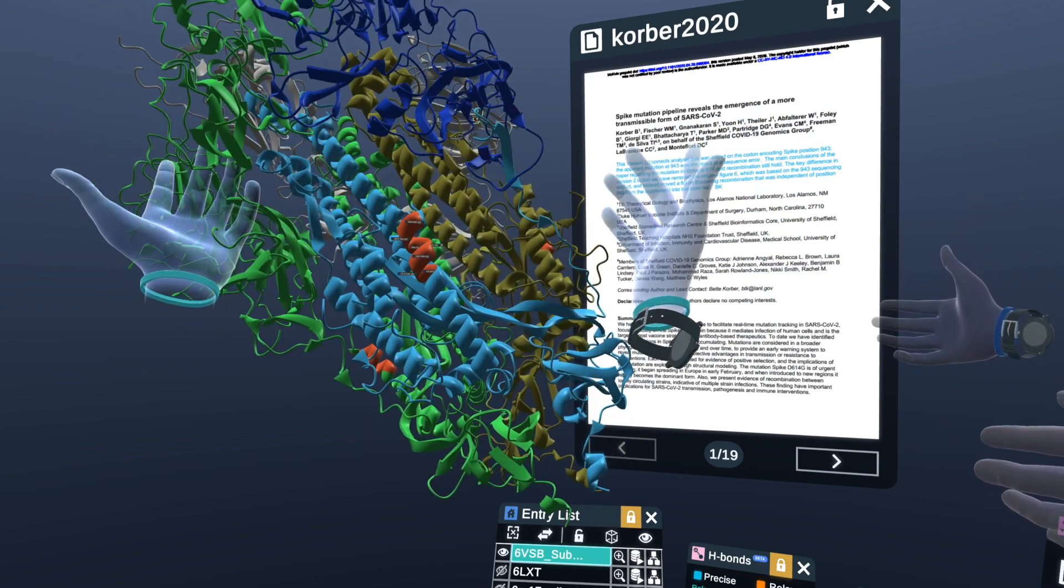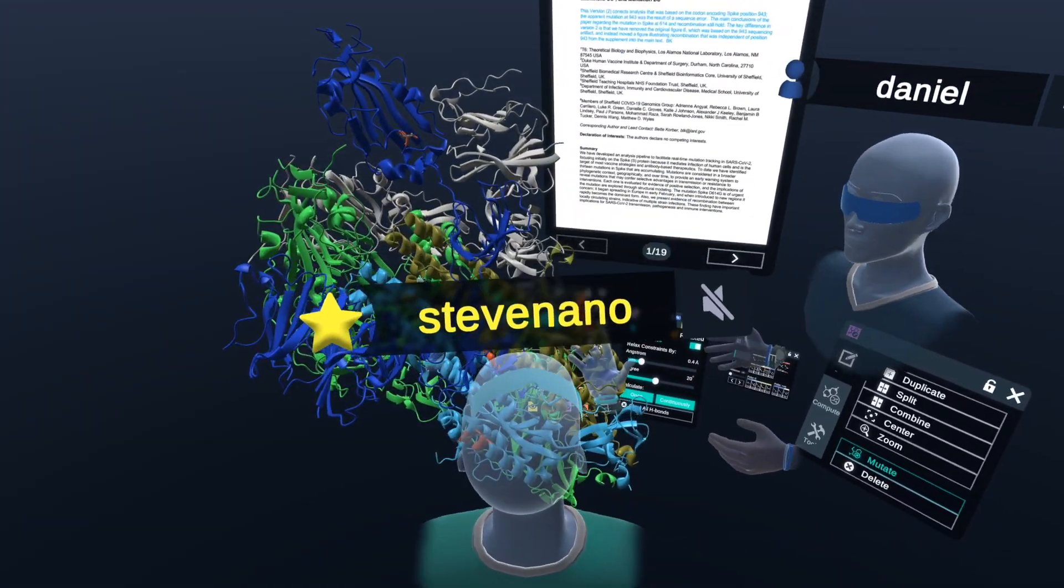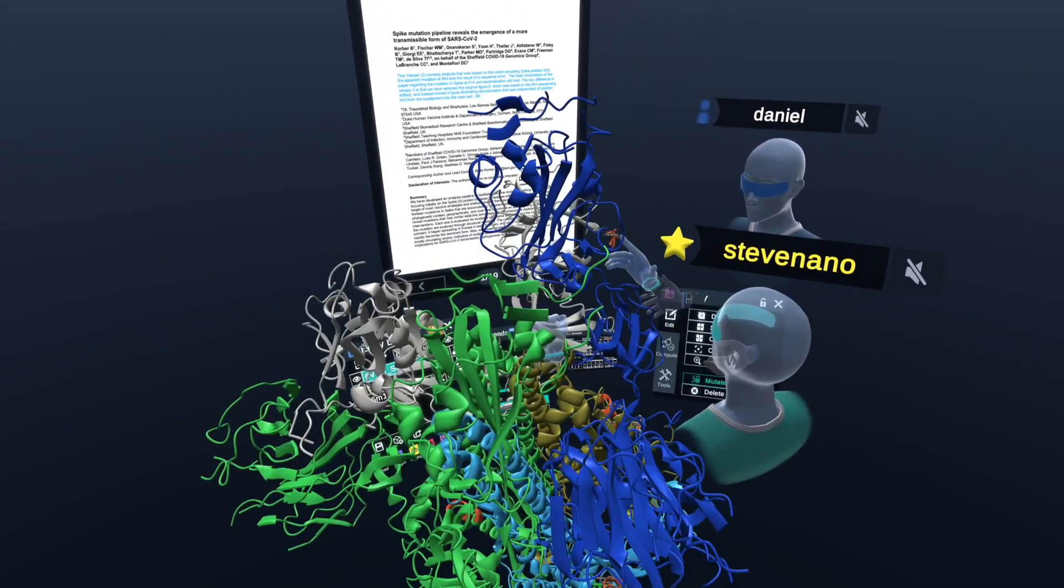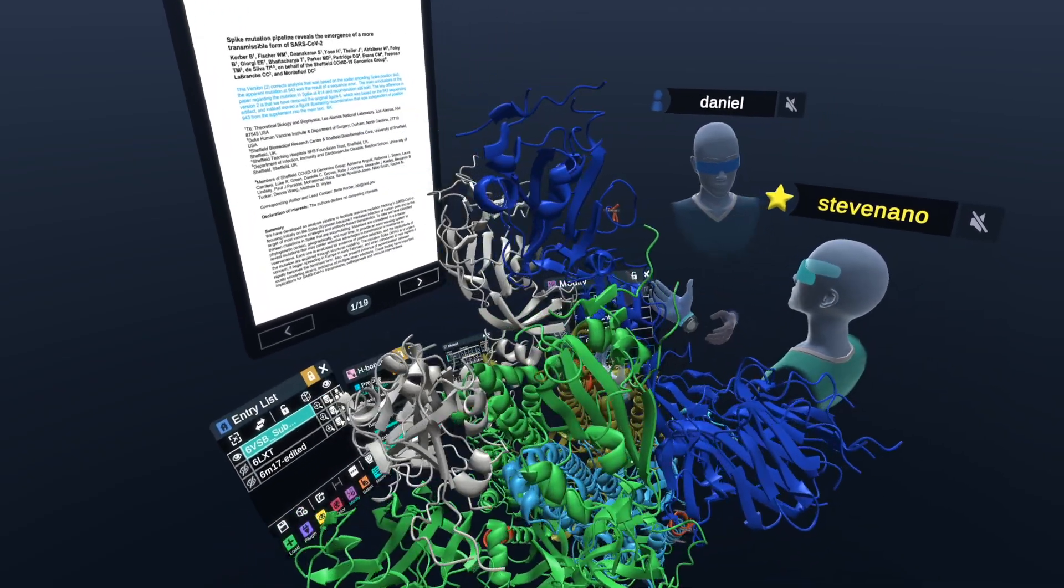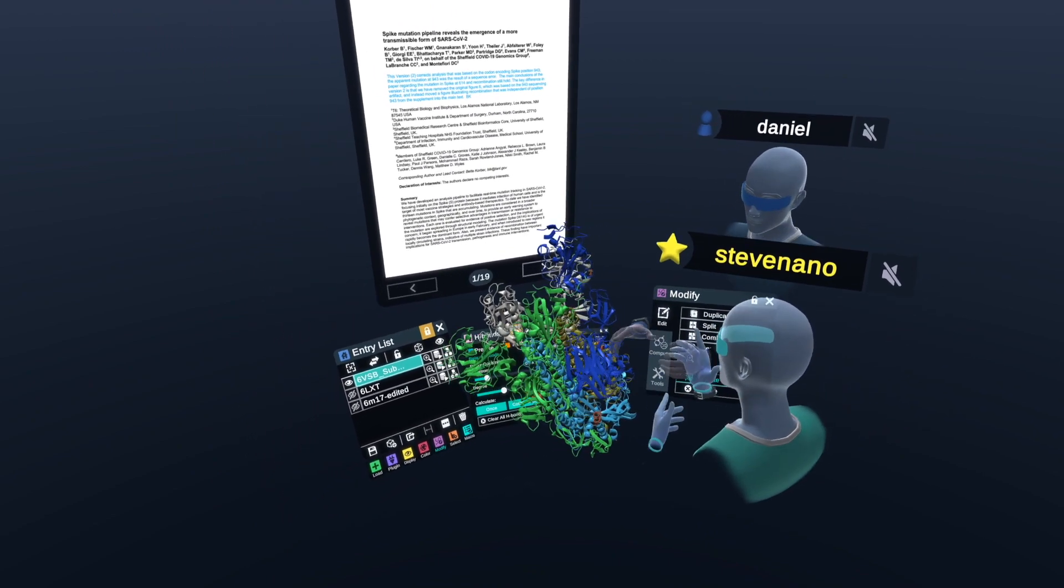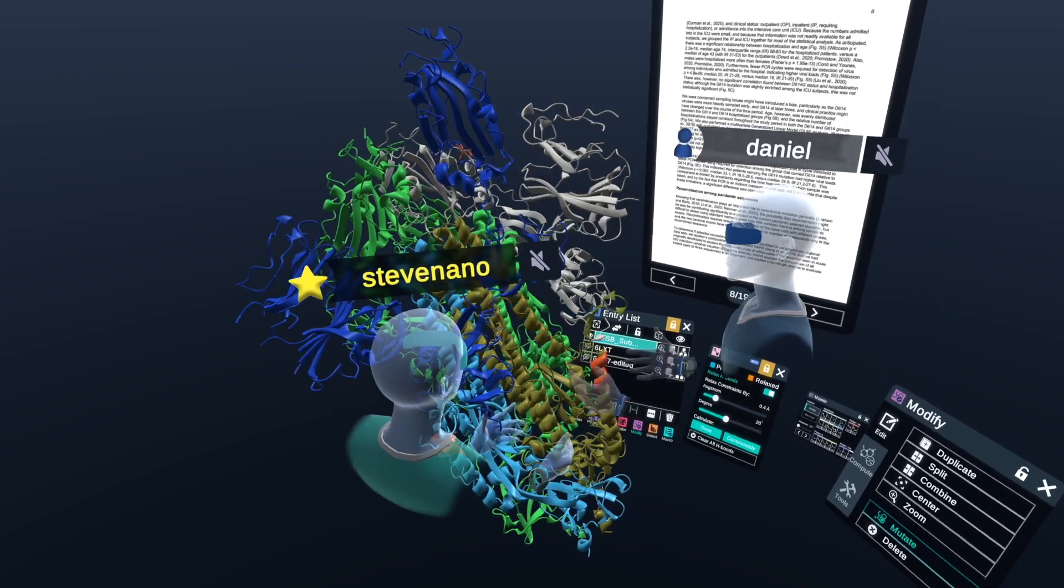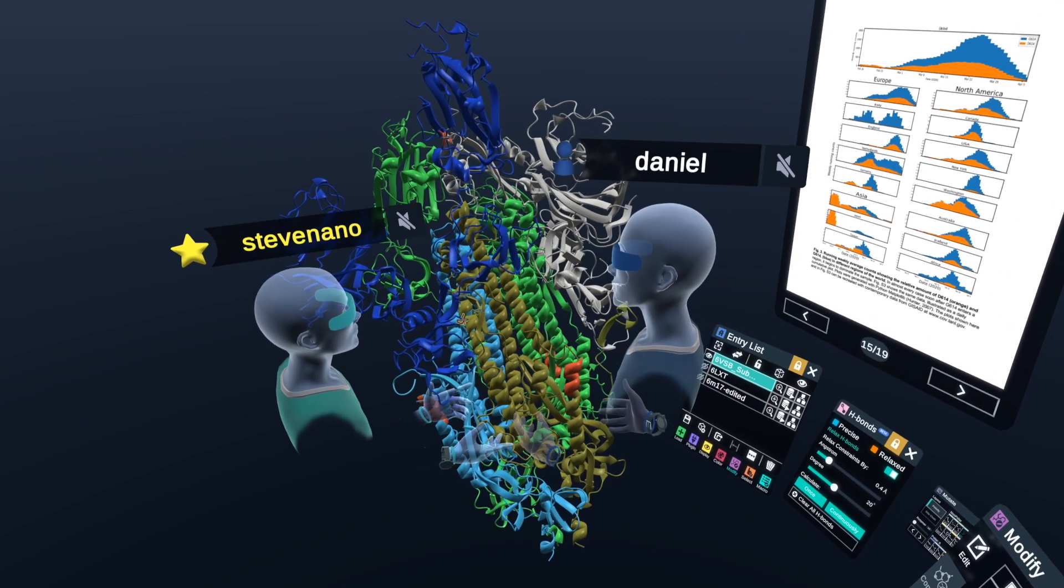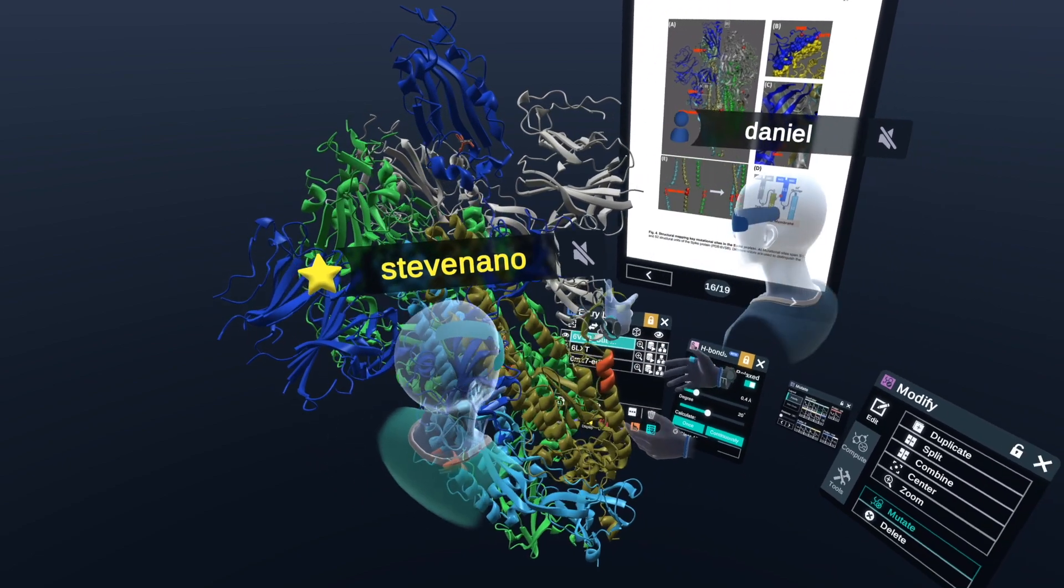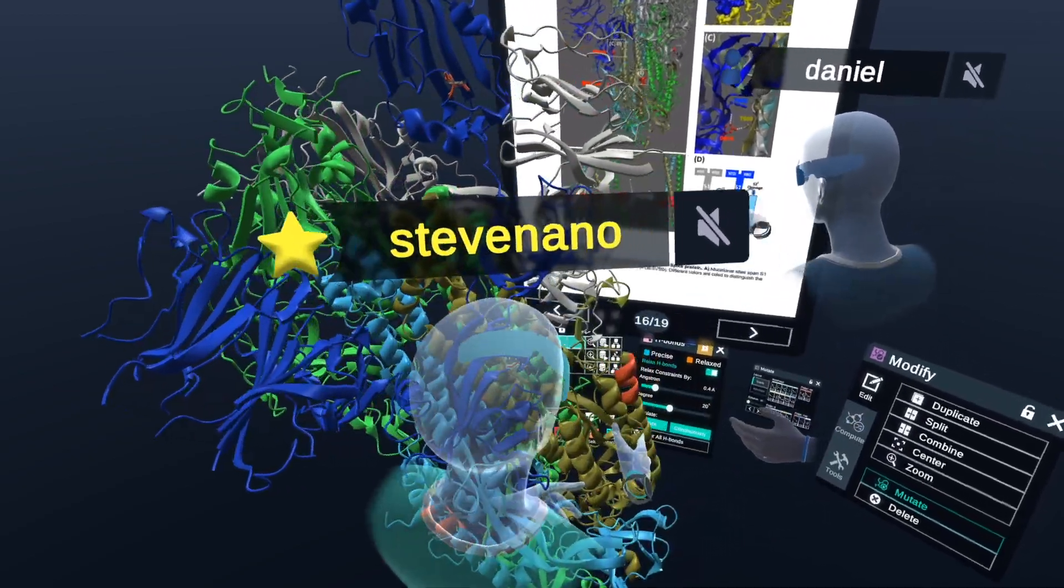So bottom line, we still don't have proof and laboratory-based evidence that this provides with more transmissibility. It's just a computational study. And definitely the title of the paper is very much of a clickbait as we discussed before. So the title is mutation pipeline reveals the emergence of a more transmissible form of SARS-CoV-2. And how do we know that this is more transmissible? How does this necessarily reveal that? And that's the scientific controversy.